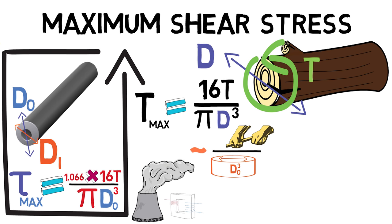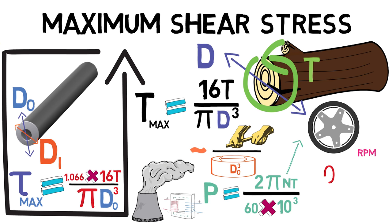The power transferred by a shaft is given by the product of 2 pi and T upon 60 into 10 to the power 3, where n is the speed in RPM. Theta here is the angle of twist.